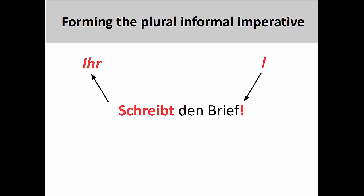First, we remove the second-person plural pronoun ihr, which then moves the verb to the first position in the sentence. We then add an exclamation point to the end. And that's it. The plural informal imperative of the verb is the same as the second-person plural present tense verb form.